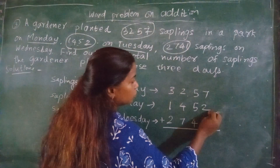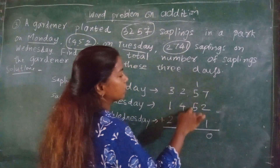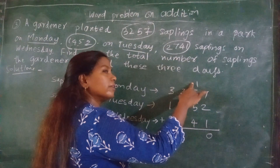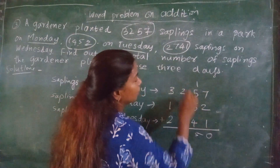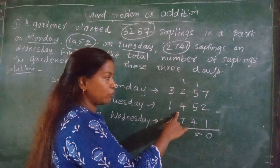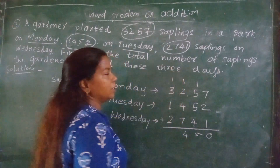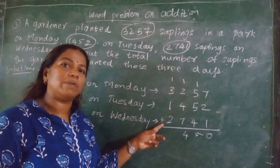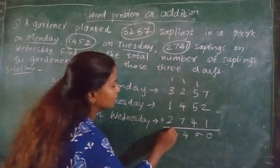7 plus 2 is 9, 9 plus 1 is 10 — write 0, carry 1. 5 plus 5 is 10, 10 plus 4 is 14 — wait, with carry: 11 plus 4 is 15 — write 5, carry 1. 1 plus 2 is 3, 3 plus 4 is 7, 7 plus 7 is 14 — write 4, carry 1. 1 plus 3 is 4, 4 plus 1 is 5, 5 plus 2 is 7.